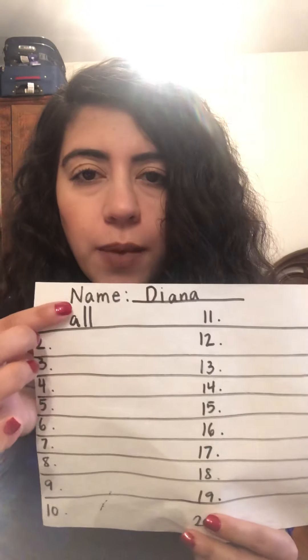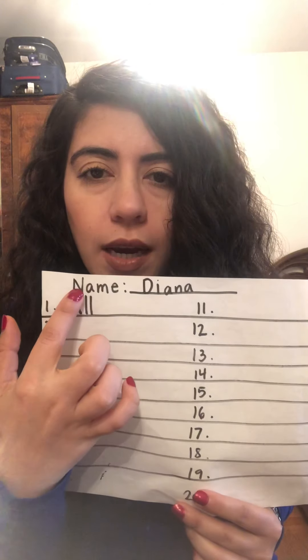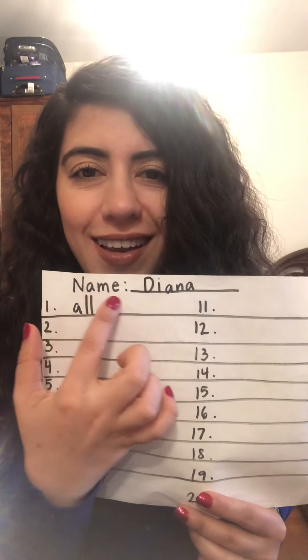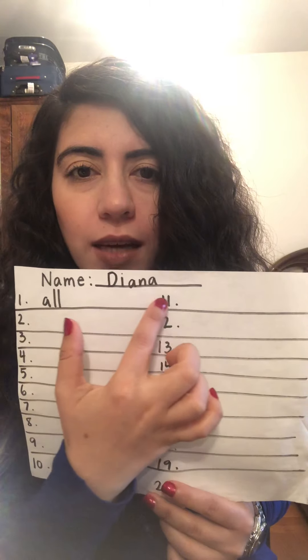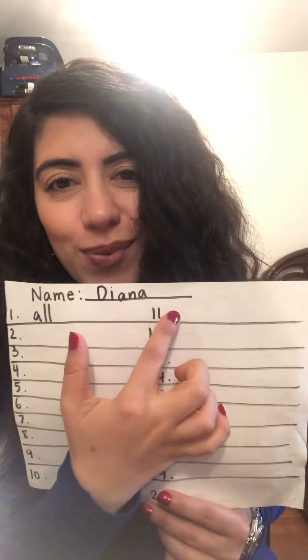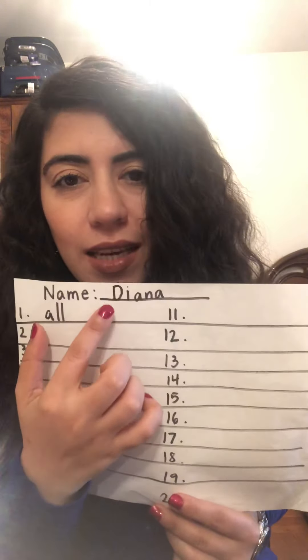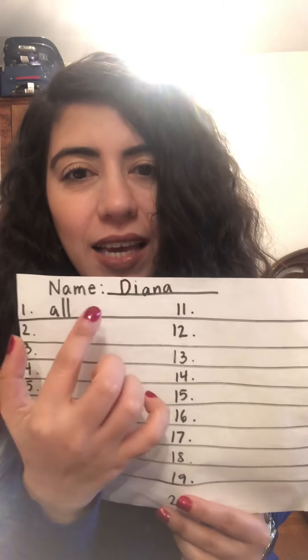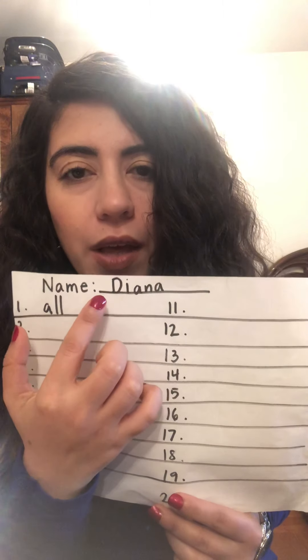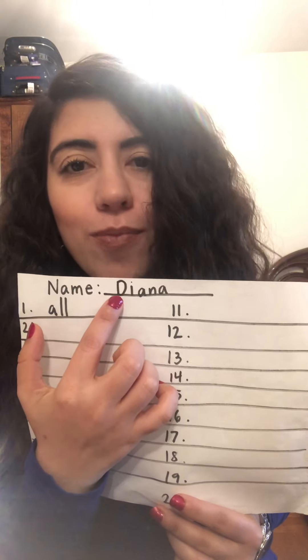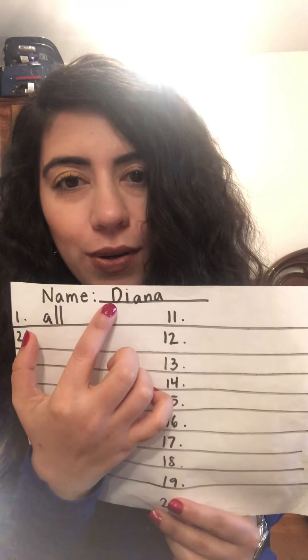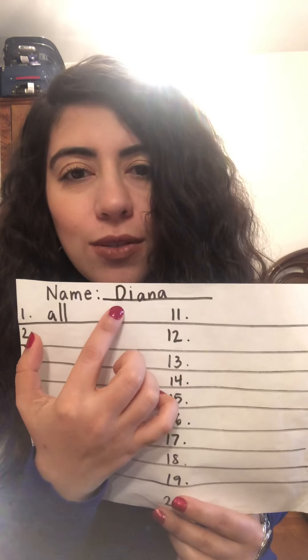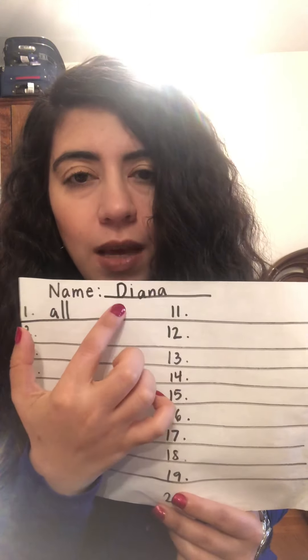At the top of the paper, we're going to write the word "name" and then make a line after that because this is where our name is going to go. I already wrote my name — I wrote Deanna because that's my name. When we write our name, the first letter must always be a capital letter — that's the rule. Everybody's name has to start with a capital letter.